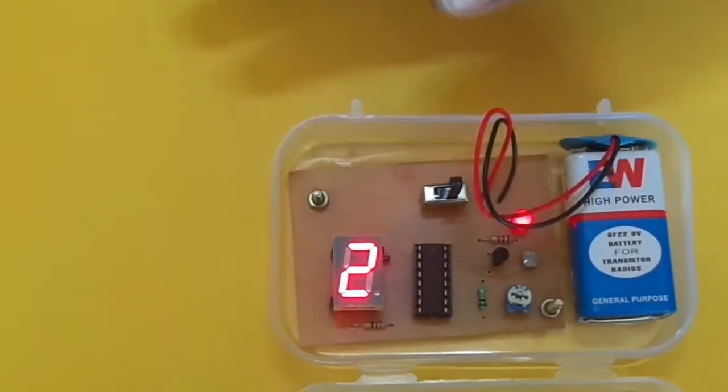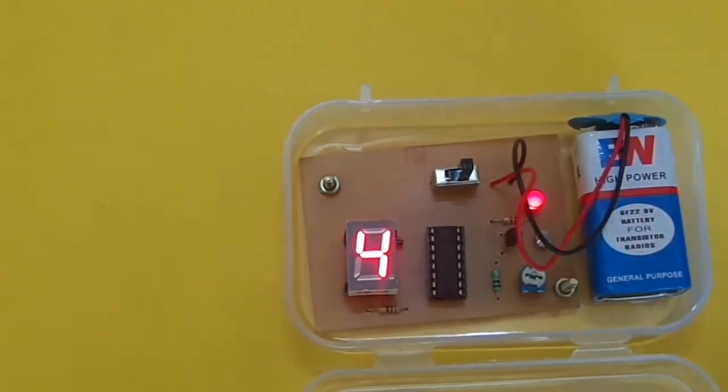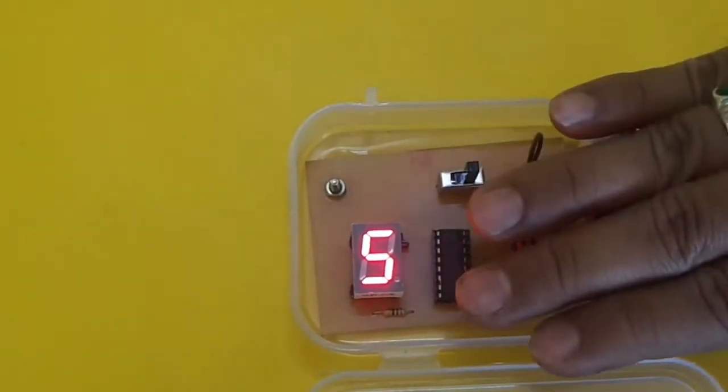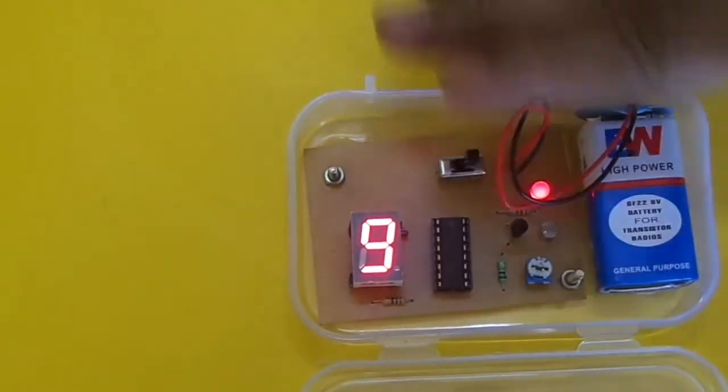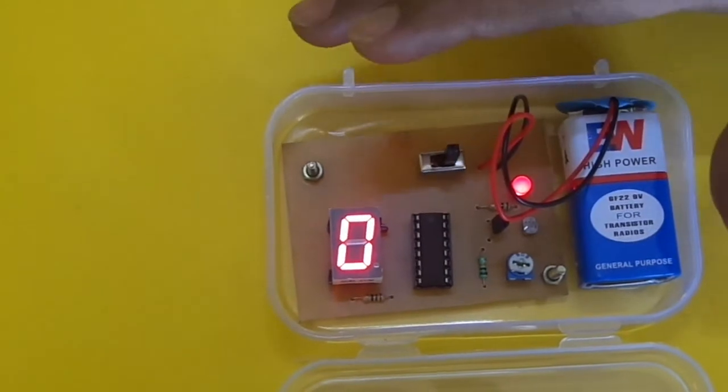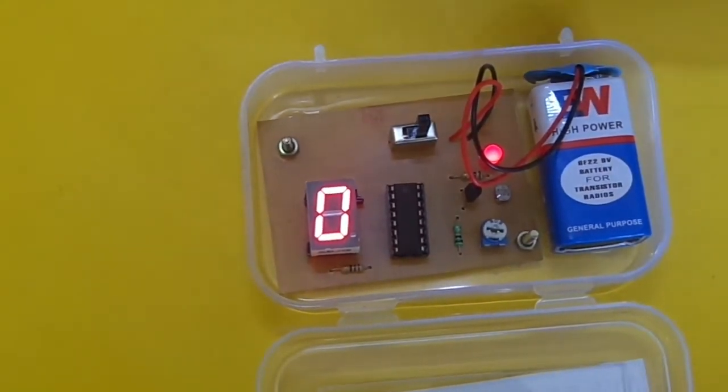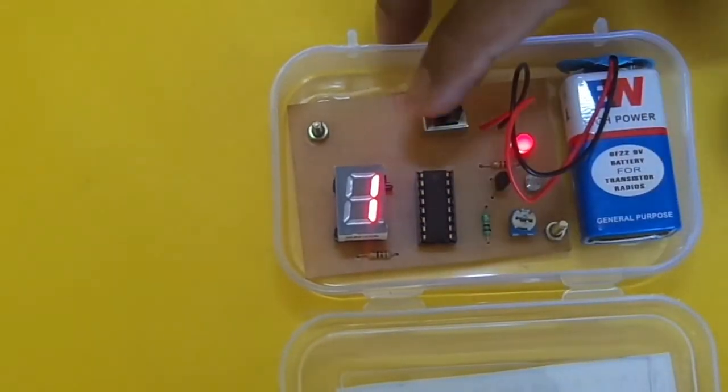And again I give a signal, three, four, five, six, seven, eight, nine, again zero. So it is just a single digit object counter and it can count only from zero to nine, that's it. Thank you.